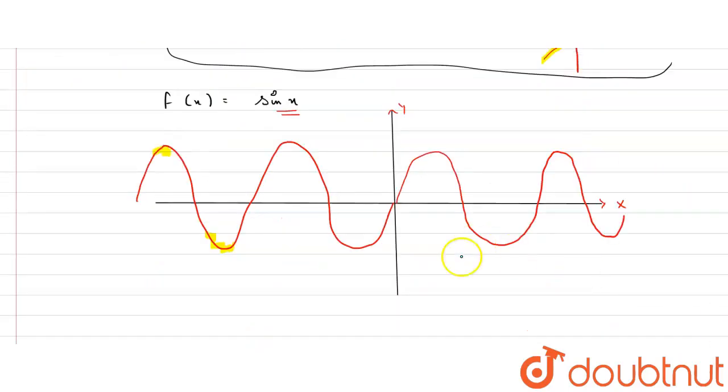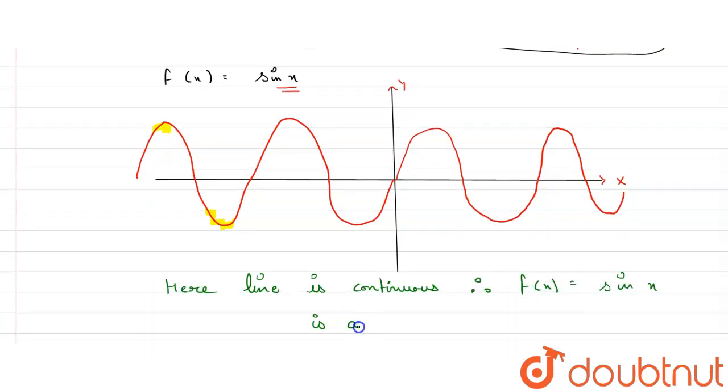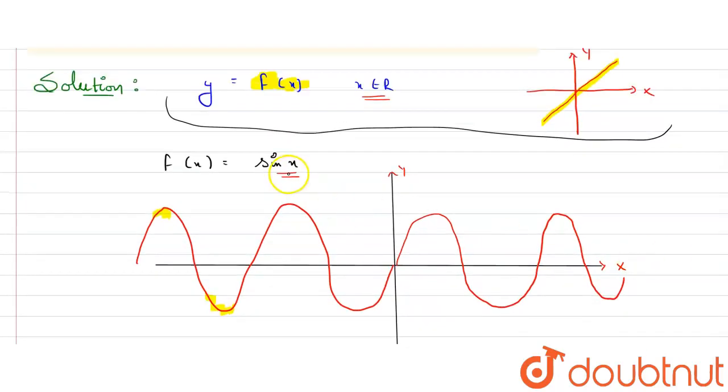So what I said in the beginning, if line of graph is not breaking anywhere then the function is continuous. So here also line is not breaking. Therefore f(x) equals sine x is a continuous function. For all values of x, this sine x will have this graph and it will not break at any point, so it is continuous at all points.